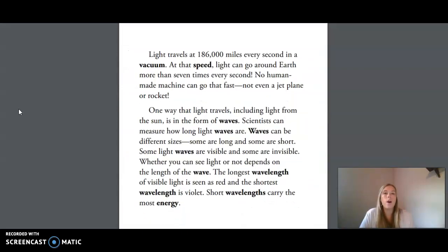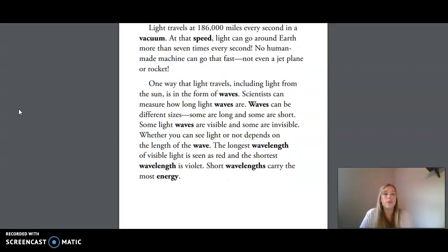Light travels at 186,000 miles every second in a vacuum. At that speed, light can go around Earth more than seven times every second. No human-made machine can go that fast, not even a jet plane or a rocket. One way that light travels, including light from the sun, is in the form of waves.